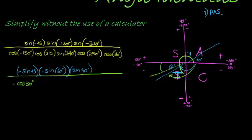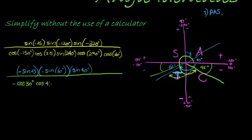Cosine of 315 — 315 is larger than 270, so it's in the fourth quadrant. It is 45 degrees shy of 360, so the angle we're making with the x-axis is 45 degrees. This becomes positive cosine of 45 degrees, because cosine in the fourth quadrant is positive.